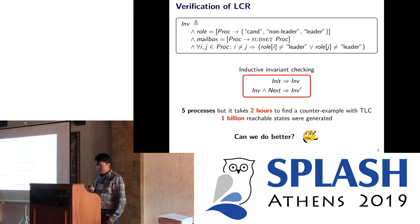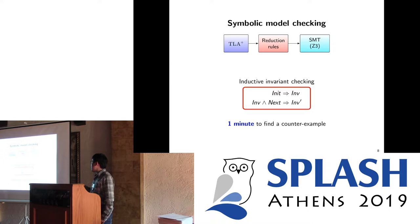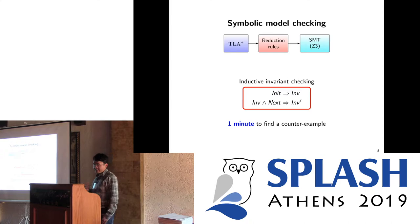The natural question is: can we do better? The answer is yes, and that's why we developed a symbolic model checker for TLA+. Going back to the example with only five processes, TLC took two hours to find a counterexample because it generated one billion reachable states. With our symbolic model checker, we can verify this property in only one minute — much faster than TLC.